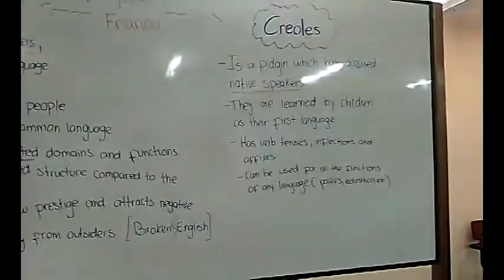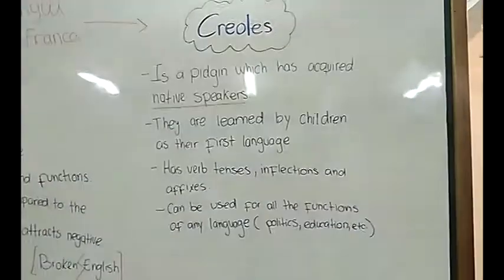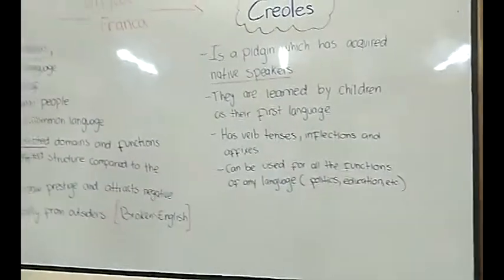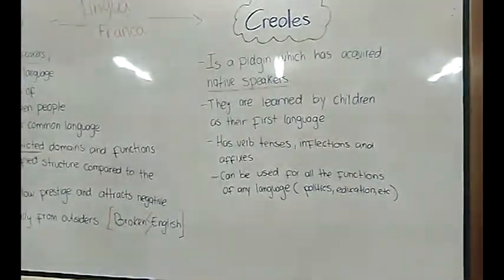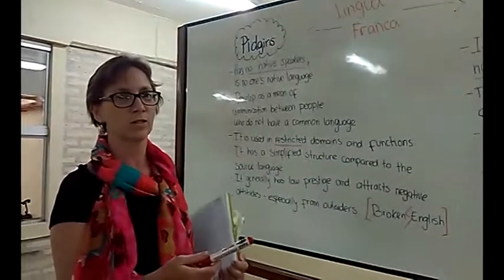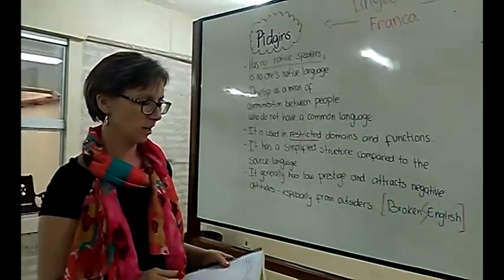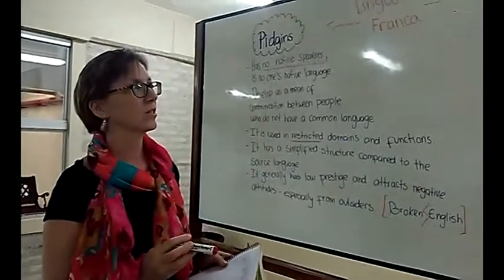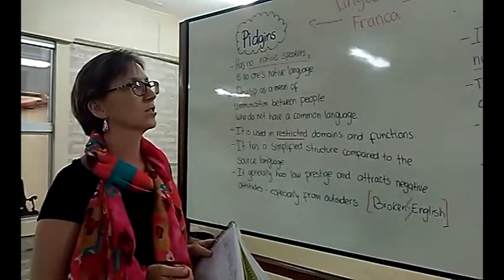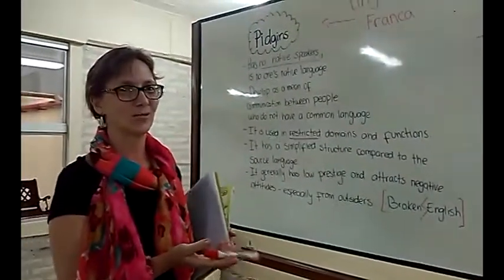And creole is a pidgin which has acquired native speakers. So the children of these Africans were growing up speaking creole, which was the pidgin of their parents, but they already grew up with this language. They are learned by children as their first language. And creole has verb tenses, inflections, and affixes. It can be used for functions of any language, like politics or education. So you could say that creole is a pidgin that is already a little bit more developed and more standardized. It also depends on a certain society or group of people if pidgin or creole gets developed. Some examples of creole today are in Haiti, in San Andres in Colombia, and in Jamaica — these creoles started out as a pidgin language and developed into creole, what we have nowadays.